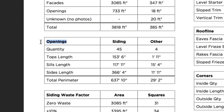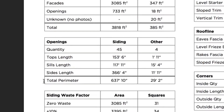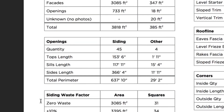The following table is the openings table. Here we're breaking down the openings information by siding or the other sections of the home. In this specific example, we have 45 total openings under the siding areas of the home. We'll then give you the trim lengths for the top, the sills, and the sides, and finally the total perimeter.